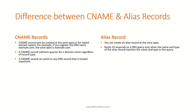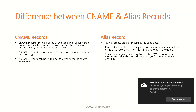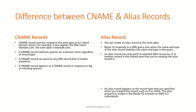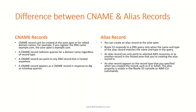A CNAME record can point to any DNS record hosted anywhere, while an Alias record can only point to a selected AWS resource or to another record in the same hosted zone. Additionally, a CNAME record appears as a CNAME in response to DIG or NSLookup queries, while an Alias record appears as the record type you specified when creating the record — such as A or AAAA. The alias property is visible in the Route 53 console or AWS CLI output.